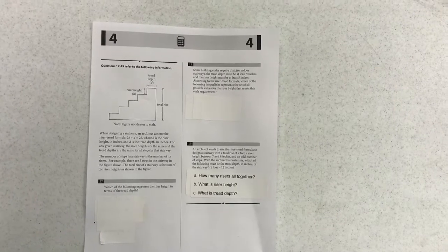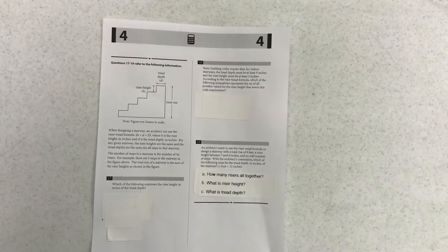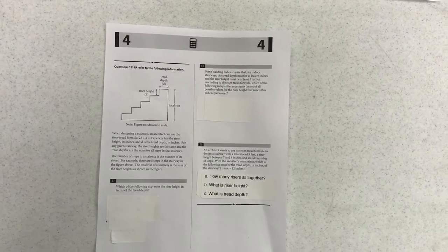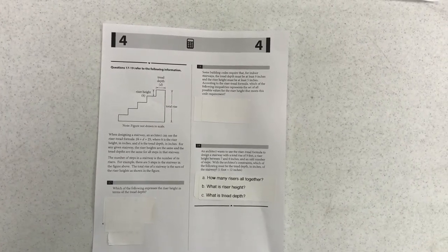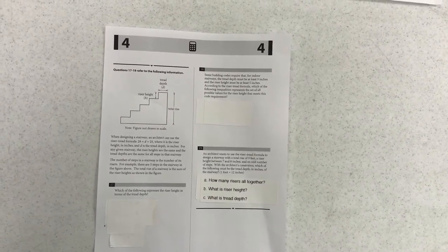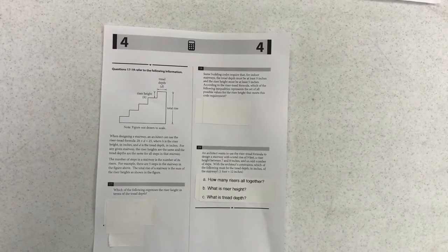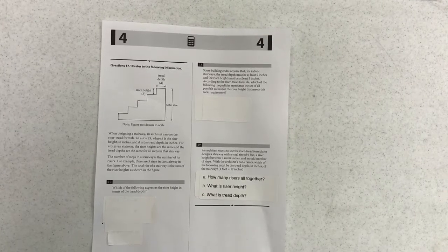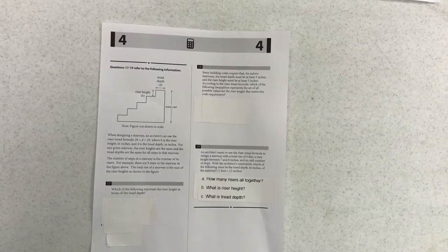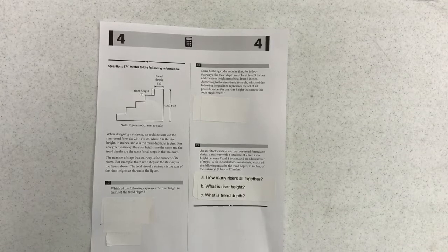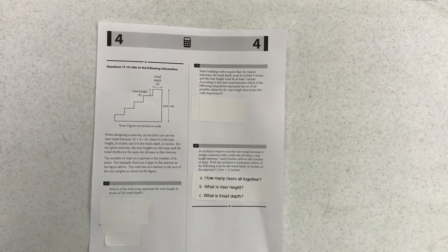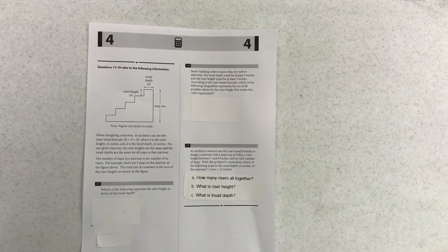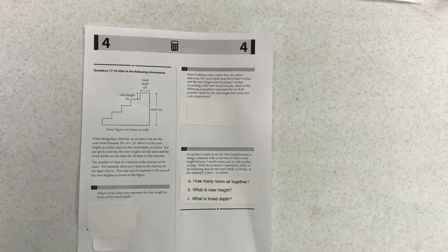Number 19: an architect wants to use the riser tread formula to design a stairway with a total rise of nine feet, a riser height between seven and eight inches, and an odd number of steps. With the architect's constraints, which of the following must be the tread depth in inches of the stairway? My specific questions for this problem are: how many risers altogether? What is riser height? What is tread depth? So there you have it. Hopefully that's clear.